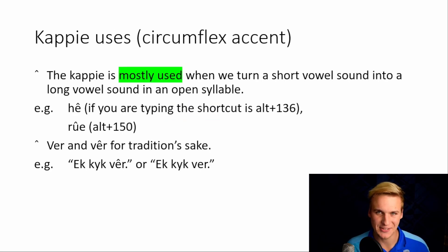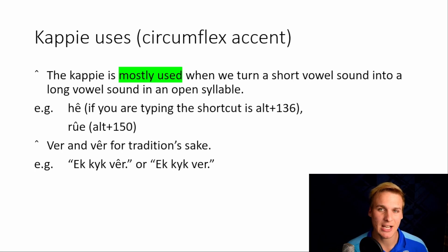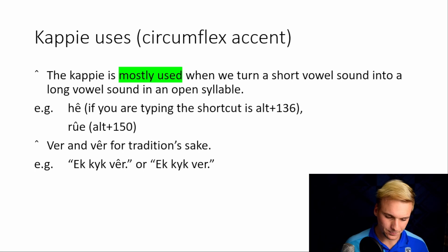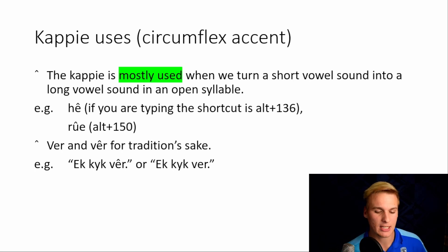The kappie, or in English the circumflex accent, is mostly used when we turn a short vowel sound into a long vowel sound in an open syllable. Open syllable. For example, ê — it's not e, it's ê, fair. You can really emphasize that ê; you can hear how we make it long.